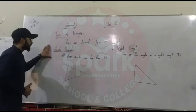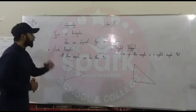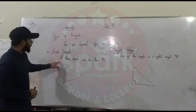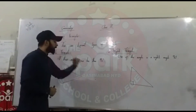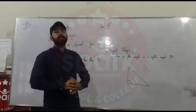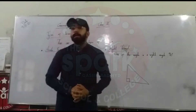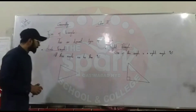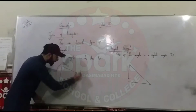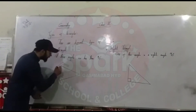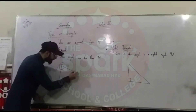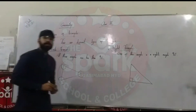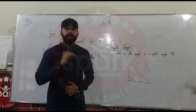The first type is the acute triangle. In an acute triangle, all three angles are less than 90 degrees. This means every angle in the triangle is less than 90 degrees.